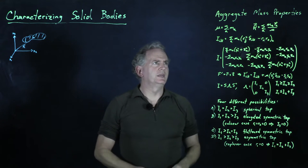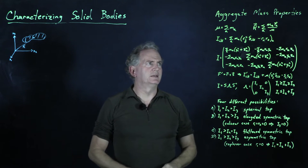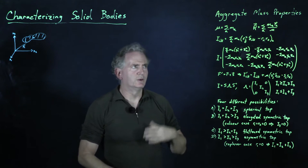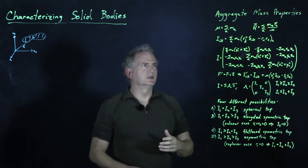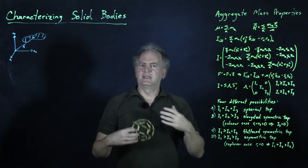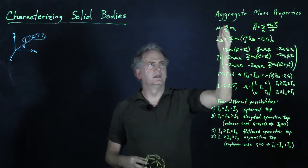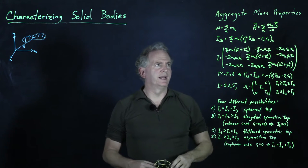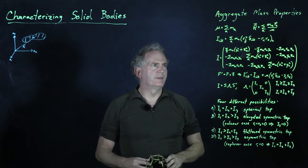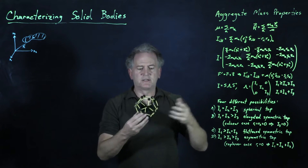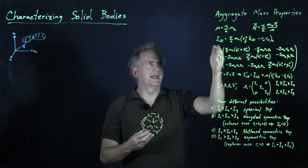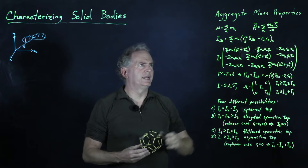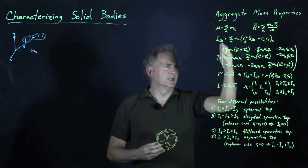The third thing we can calculate is something called the inertial tensor. We are going to show in a later lecture that the dynamics depend on the total mass, the location of the center of mass, and the distribution of the mass as summarized by this inertial tensor.